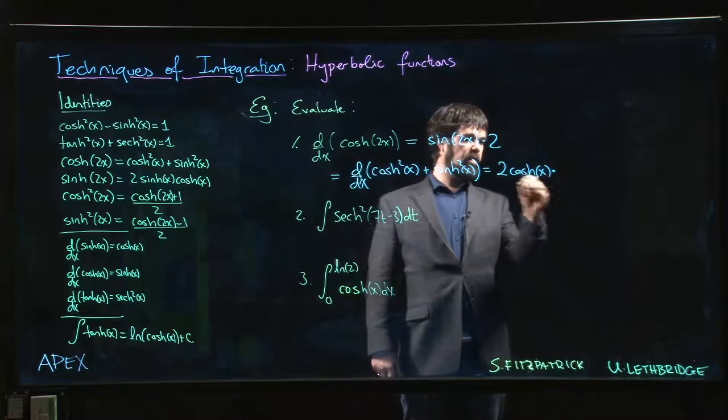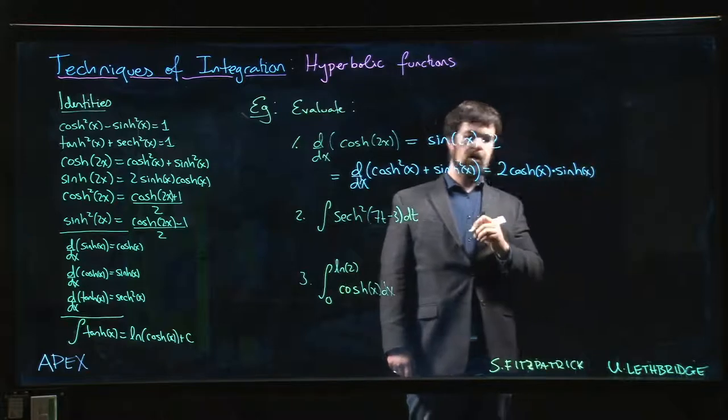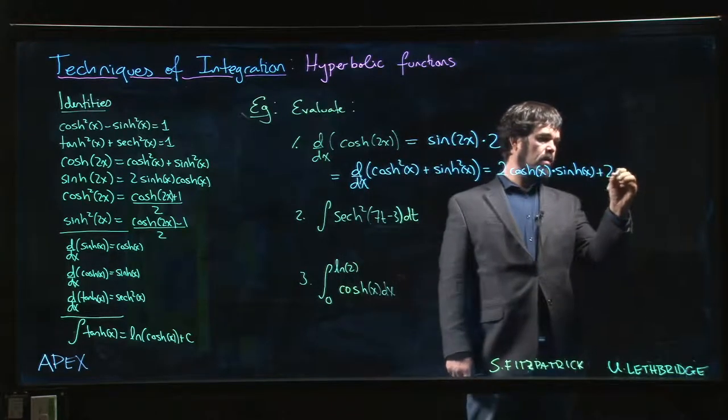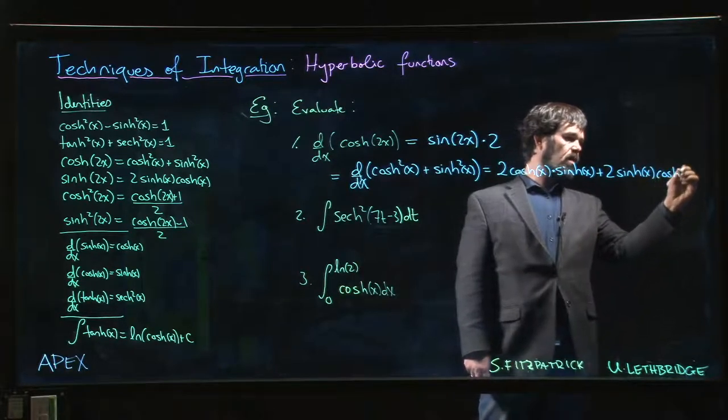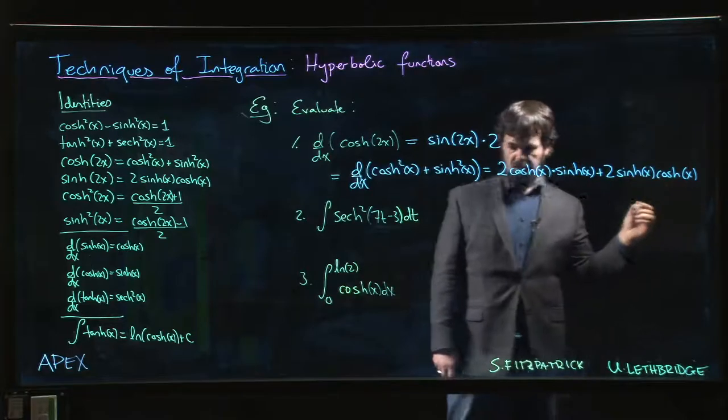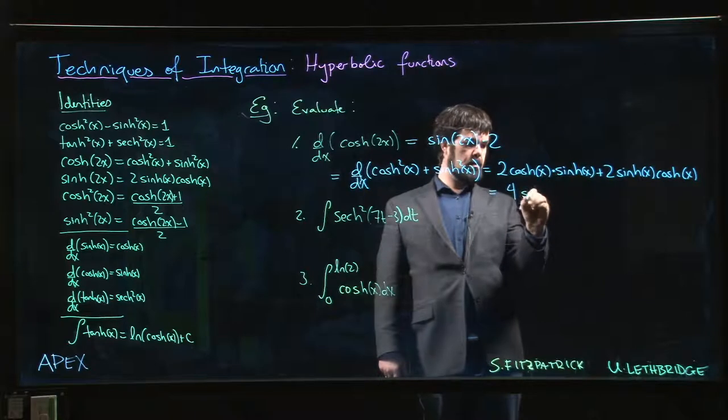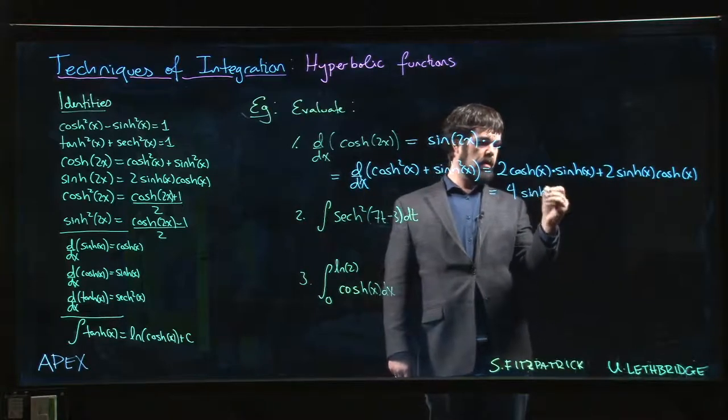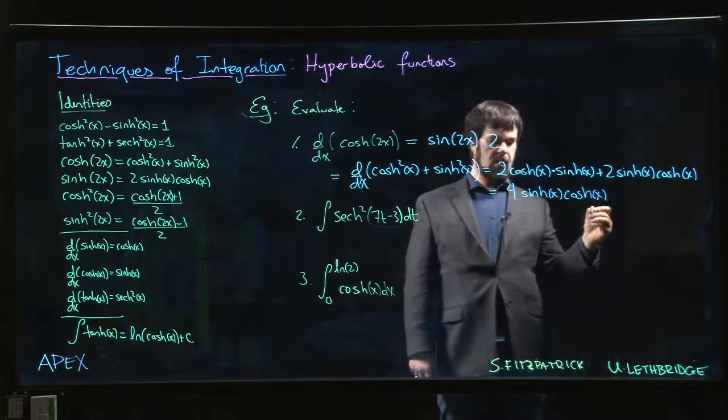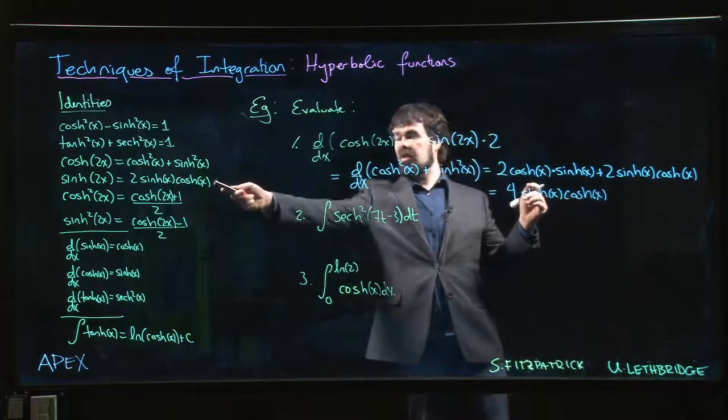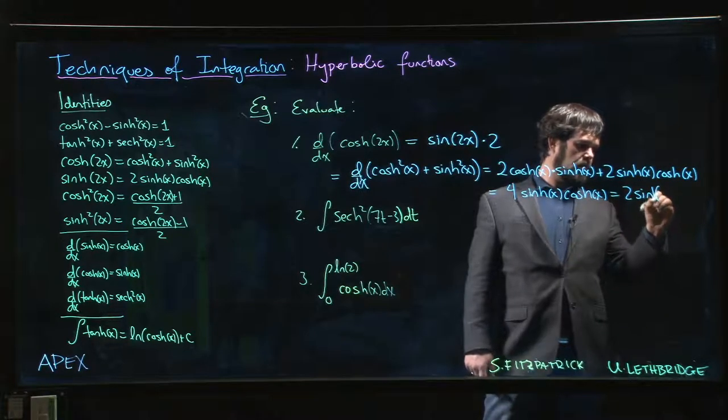We get sort of the same story here, except this time it's hyperbolic sine on the outside and its derivative is hyperbolic cosine. We add those up and get 4sinh(x)cosh(x), and that is, according to this identity here, the same thing as 2sinh(2x). Same result either way. Don't forget the h.